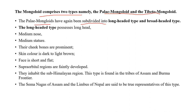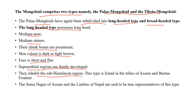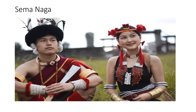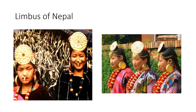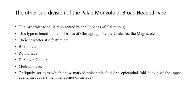Mongoloid comprises two types: Paleo-Mongoloid and Tibeto-Mongoloid. Paleo-Mongoloid is further divided into long-headed type and broad-headed type. The long-headed type possesses a long head, medium nose, medium stature, prominent cheekbones, dark to light brown skin, short and flat face, and faintly developed supraorbital regions. These live in sub-Himalayan regions — tribes of Assam, Burma, Sema Nagas of Assam, and Limbus of Nepal.